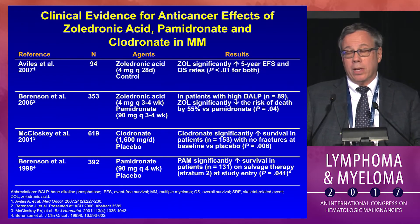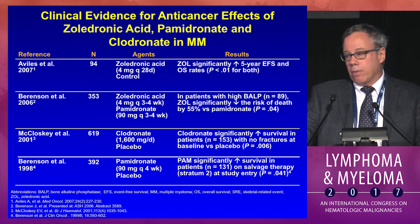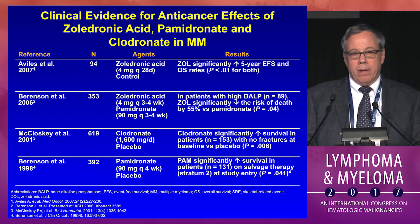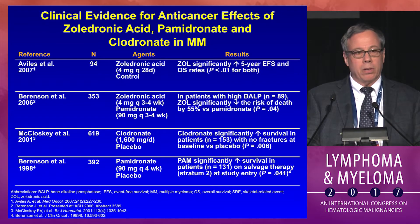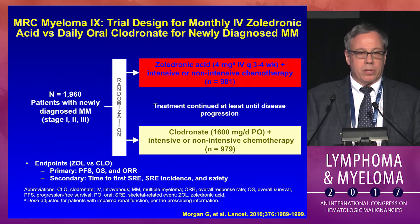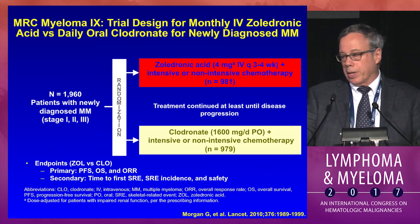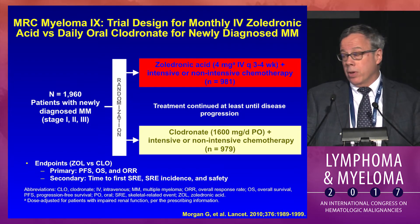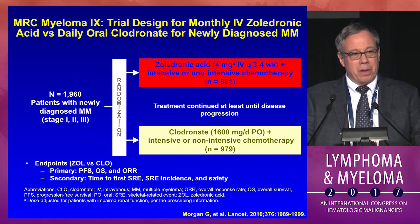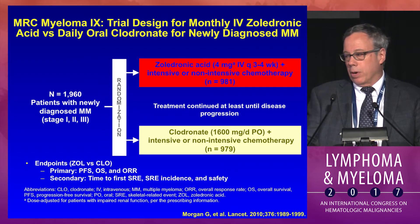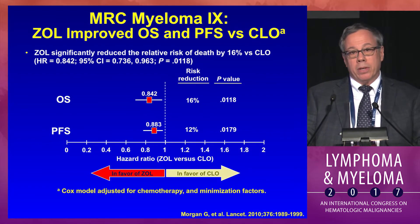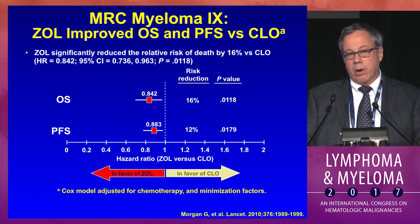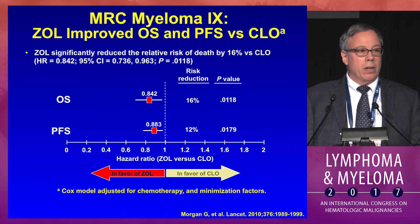Clinically, hints came from frontline trials including the McCloskey study and the last three trials with zoledronic acid and the weaker molecule clodronate. Then the MRC Myeloma 9 trial from Dr. Morgan, in which nearly 2,000 myeloma patients were randomized to receive either zoledronic acid monthly or clodronate — which I like to say is like morphine versus baby aspirin. This demonstrated not only an improvement in skeletal endpoints but impressively an improvement in overall survival favoring zoledronic acid compared with daily oral clodronate, as well as progression-free survival benefit.